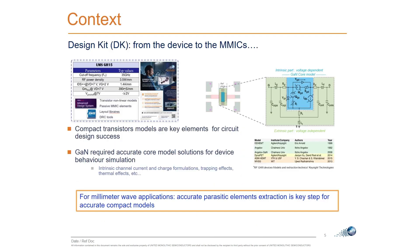What we need to provide to our customers in foundry mode is the PDK — Process Design Kit. The PDK must include libraries of components, passive elements, but also active elements including the nonlinear model for transistors, and importantly, scalable nonlinear models. The main activity of an RF designer is MMIC optimization — optimizing the first and second stages of an amplifier to determine the best transistor topologies. Without scalable models it is very difficult to produce optimized MMICs.